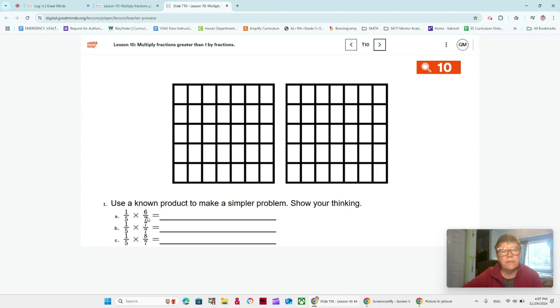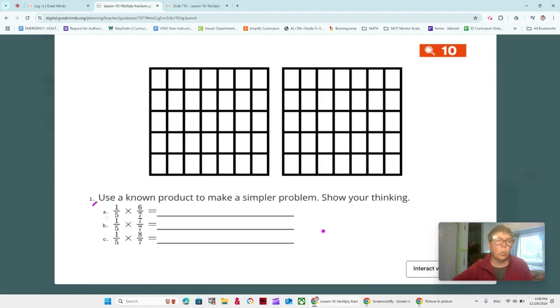We have one fifth times six sevenths, one fifth times seven sevenths, and one fifth times eight sevenths. Are there any problems involving fractions greater than one? Did you notice this one right here? Eight sevenths, greater than one. And seven sevenths would be the same as one. And then six sevenths would be less than one. Problem one looks like expressions we saw in our last lesson, in lesson nine. How did we make a simpler problem here? We rewrote it as fractions, unit fractions times a whole number. We're going to be working on that again today. So hopefully you remember it.